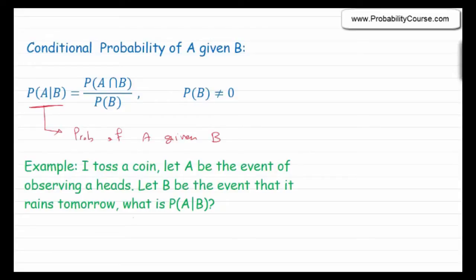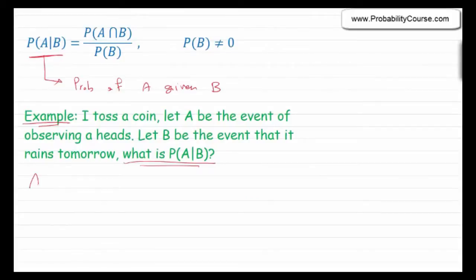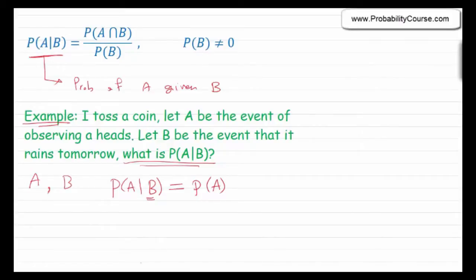Now, let me ask you a quick question. Here is an example: I toss a coin and let A be the event of observing heads, and let B be the event that it rains tomorrow. What is the probability of A given B? Well, you probably answer that these two events are not related — there is no dependence between them. The fact that it rains tomorrow does not have anything to do with the result of my coin toss. So you might argue that the probability of A given B must be equal to the probability of A — in other words, this additional information does not change the probability of A.